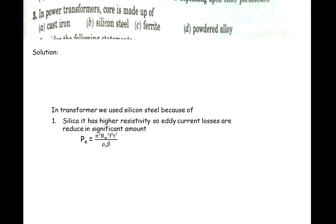Silicon steel has higher resistivity due to the addition of silicon, so eddy current losses are significantly reduced — eddy current losses are inversely proportional to resistivity. This is the first reason. The second reason is that with silicon added, the permeability μ increases, meaning the ability to permit magnetic lines through the core increases. Due to this, overall magnetic capability improves and hysteresis losses are also reduced. So Option B, silicon steel, is correct.